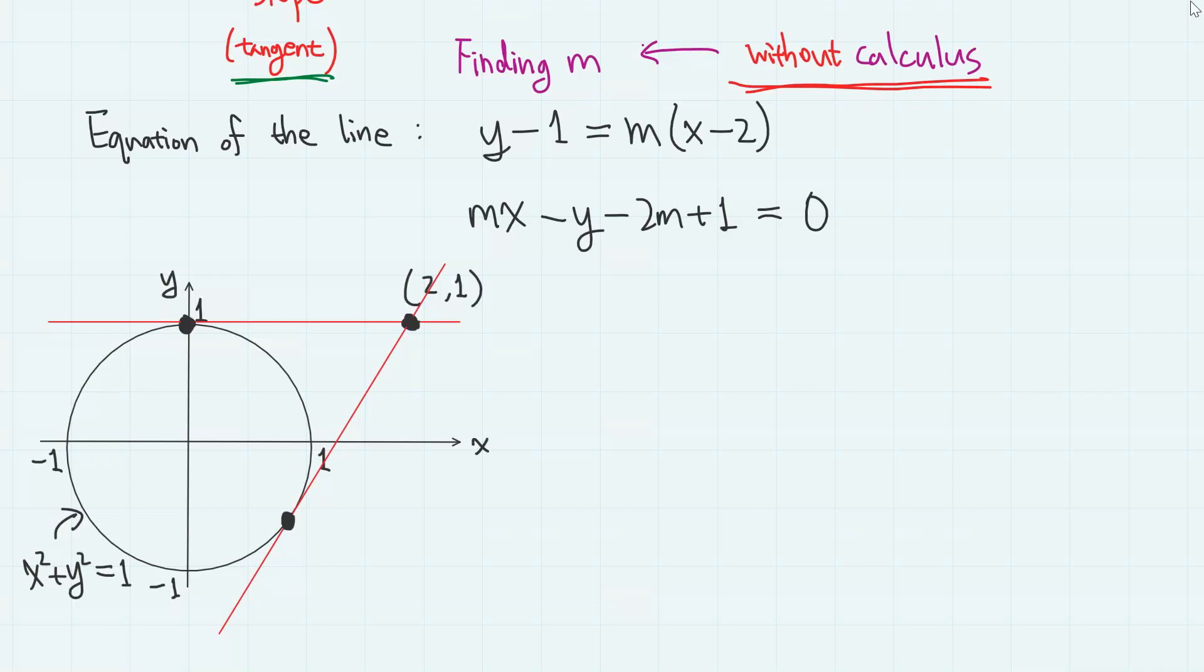Now let us think about what happens when this line is tangent to the circle x squared plus y squared equals 1. In that case, the distance from the center of the circle to the line is equal to the radius of the circle.